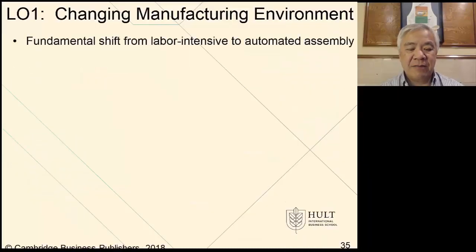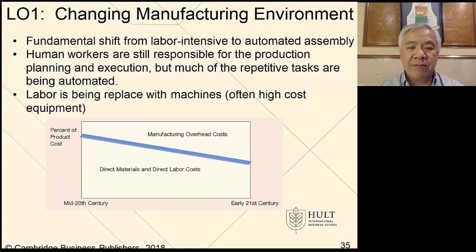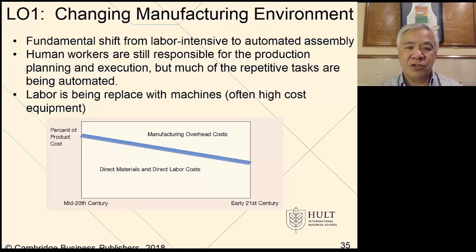As far as the environment that we're facing, we're seeing that automation has replaced labor, and this has happened over the course of the last century. What this has done is changed the accounting requirements such that overhead used to be a small component, so if you were imprecise, it didn't matter. But now overhead is a majority of the cost of manufacturing, so all of a sudden, it's the most important thing to get right.